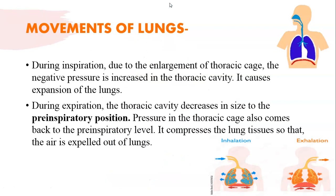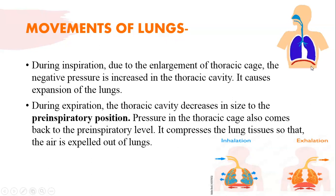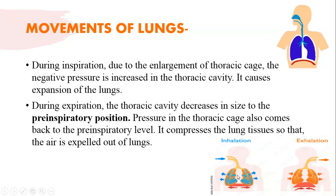During inspiration, due to enlargement of the thoracic cage, the negative pressure is increased in the thoracic cavity, which causes expansion of the lungs. During expiration, the thoracic cavity decreases in size back to the pre-inspiratory position, compressing the lung tissue so that air is expelled out.